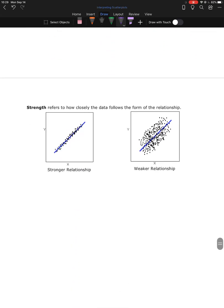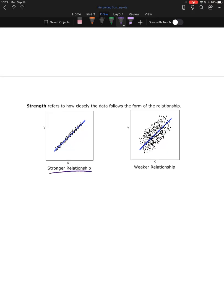And then the last thing we're going to look at with our scatterplot is strength. So how closely is the data following the form that we found? So is the data all really close together like we see here? That's a very strong relationship. Or is it definitely moving in some sort of linear fashion, but maybe the data is more spread out, giving us a weaker relationship? Or maybe somewhere in between?